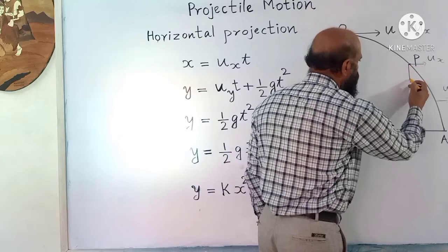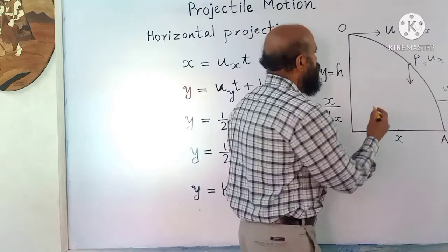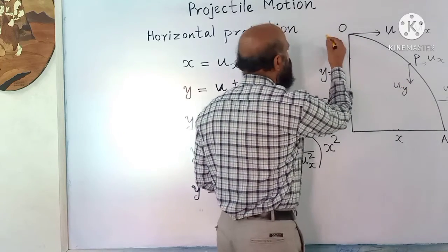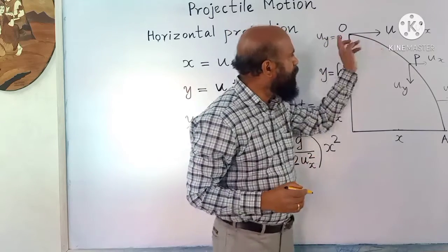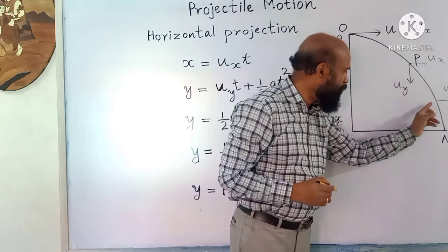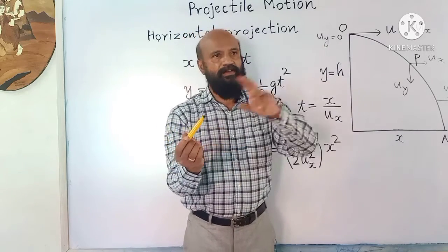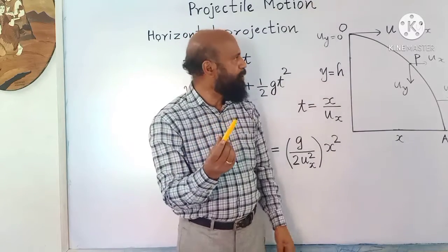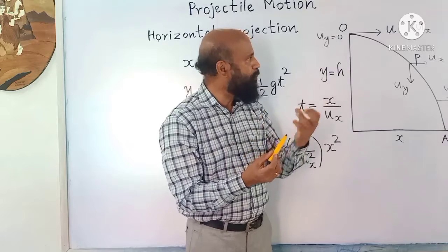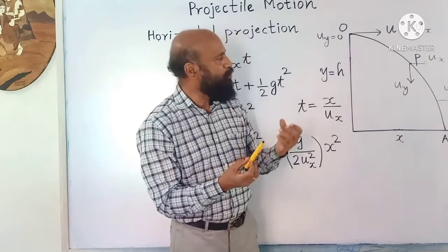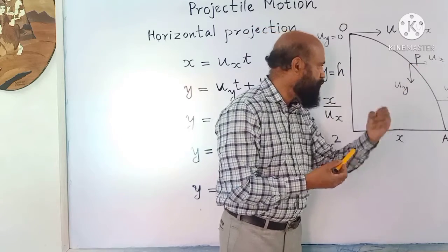The vertical velocity will be going on increasing during the downward motion, and that is u_y. Initially, the velocity in the vertical direction is zero. If you are throwing at a particular angle, during the upward motion velocity will be decreasing and during the downward motion it will be increasing. So the vertical velocity will be going on changing — either increasing or decreasing.